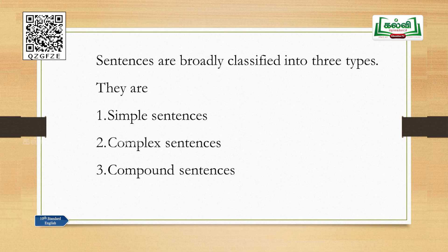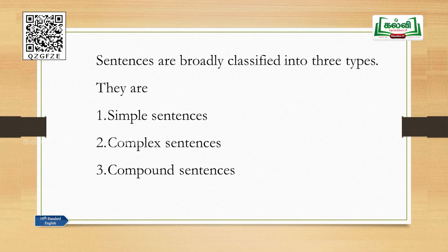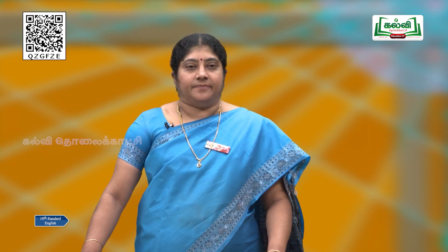Sentences are broadly classified into three types. What do you mean by a sentence? A sentence is nothing but a group of words which makes sense. Now we are going to see the three broad classifications of sentences. Number one: simple sentence. Number two: complex sentence. Number three: compound sentence. Let us see all about these in detail.